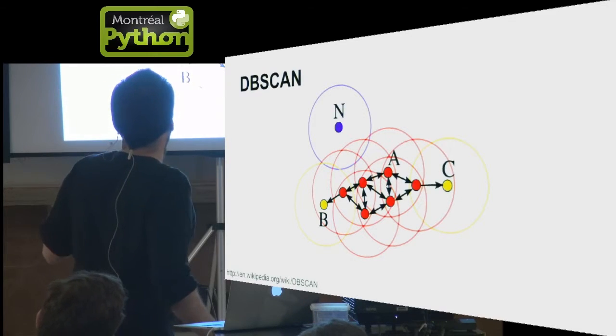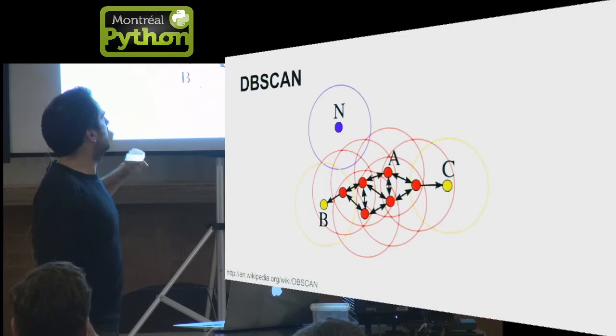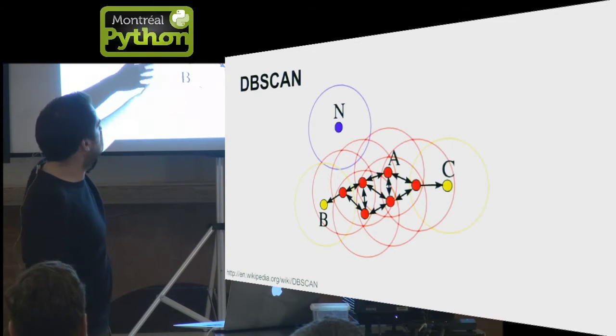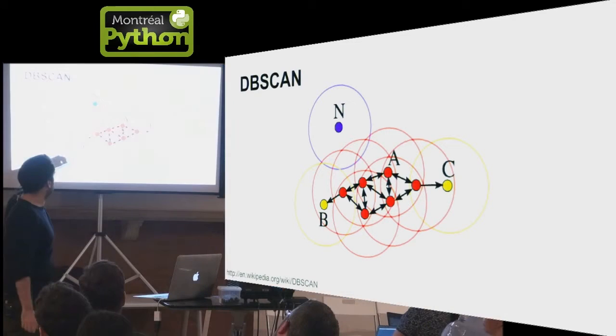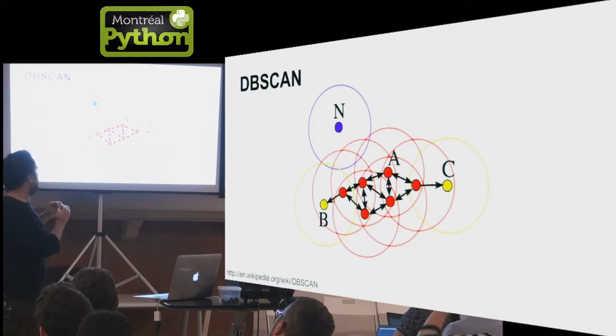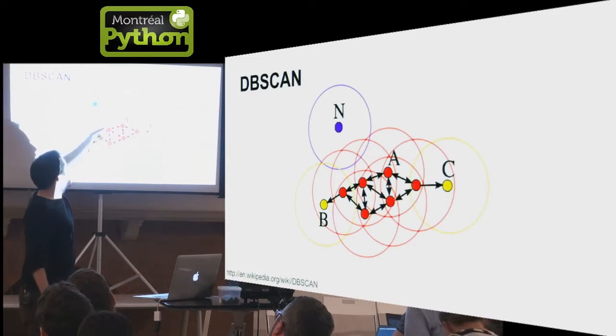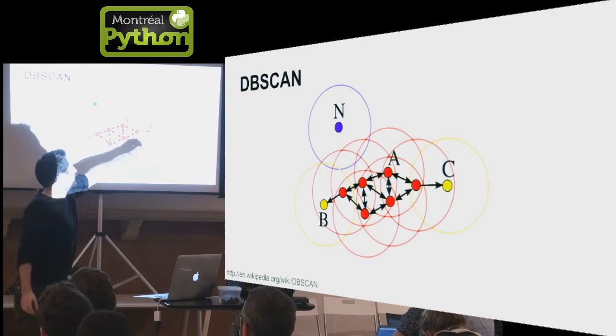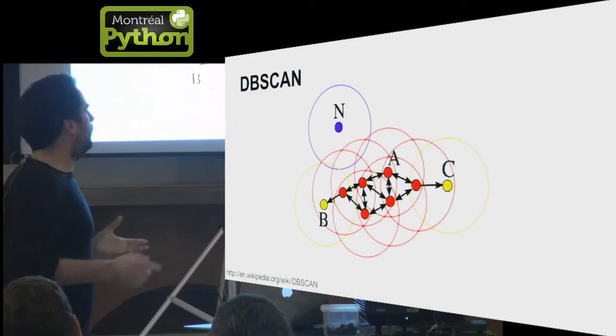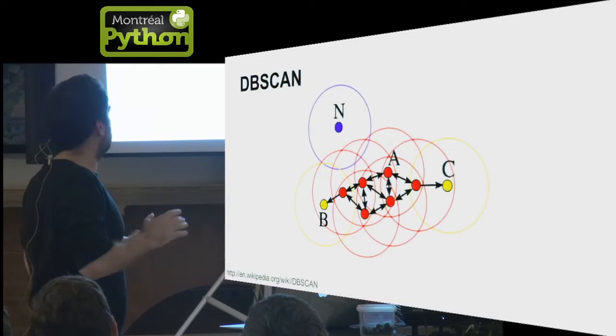This is the outline of the algorithm. Let's say for instance you start from b. This is not a core point, because if the minimum number of points is two in that case, there is a single point in that region. So you move on to the next one and identify that this is a core point. So you put it in a cluster, and b is still enabled so you include it in the cluster as well, and you propagate. Then you include all of those in the same cluster, but n is outside of the radius of any core points, so you label it as noise and leave it as noise.